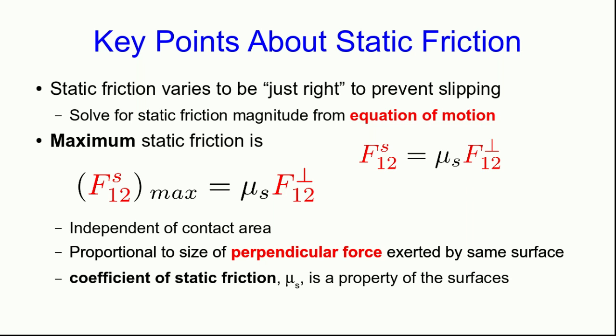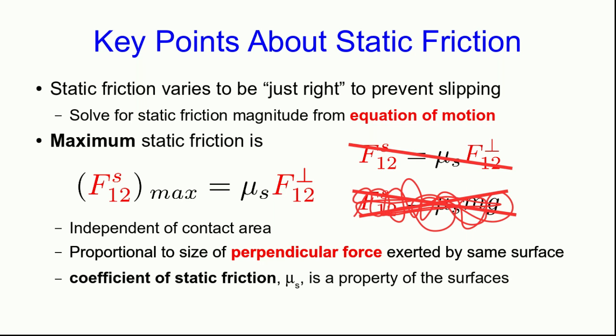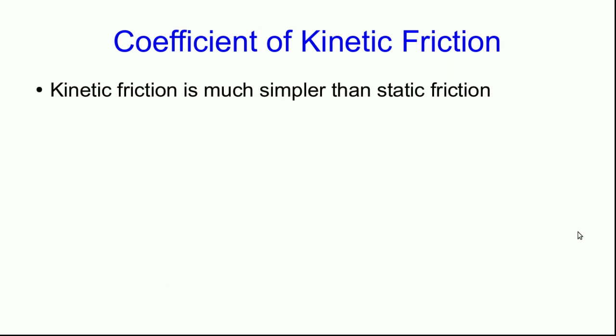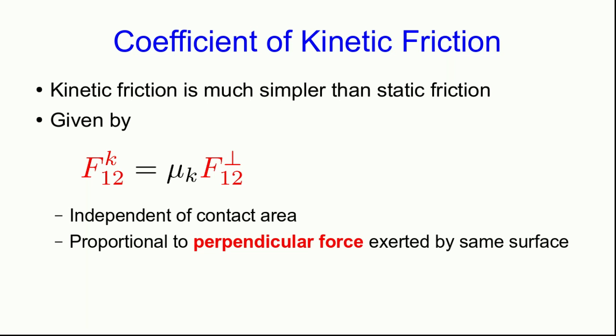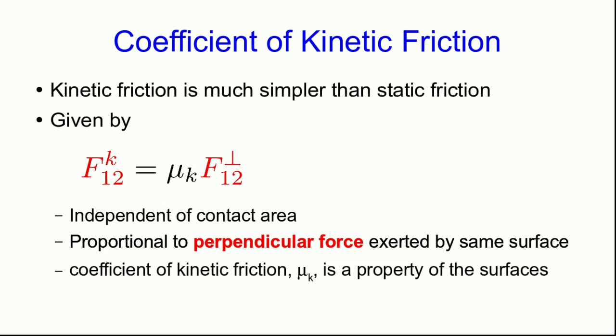The formula claiming that static friction equals mu s times the perpendicular force is wrong — don't even think it. On the other hand, once things start sliding, kinetic friction is simpler. Kinetic friction is actually given by mu k times the perpendicular force. Like static friction, this is independent of contact area, and the coefficient of kinetic friction is a property of the surfaces. When sliding starts, the kinetic friction that replaces maximum static friction is smaller, which means the kinetic friction coefficient is smaller than the static friction coefficient between the same surfaces.